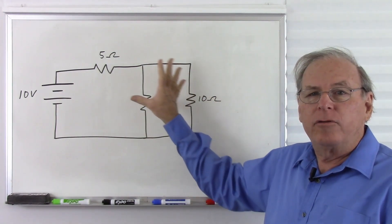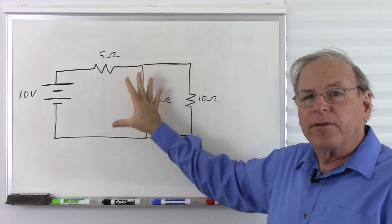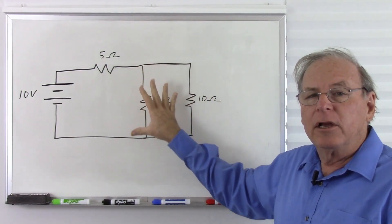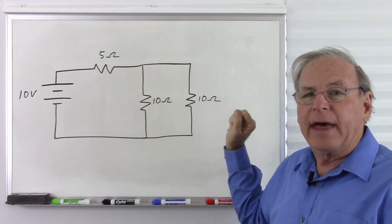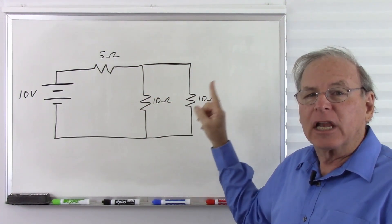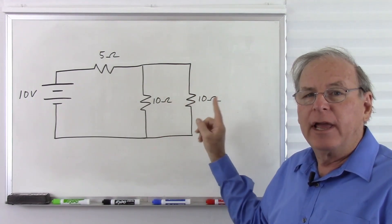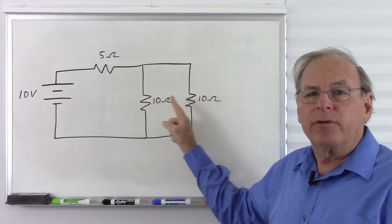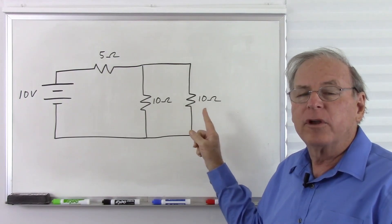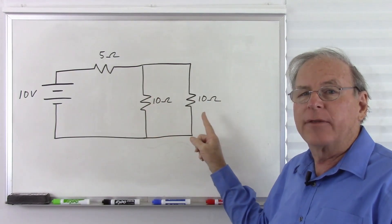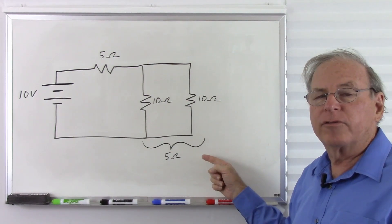Now let's see how these two parts of the circuit interact with each other. These two resistors are in parallel, so they act like a single resistor that has less resistance than the lowest-valued resistor. Both of these resistors have the same resistance — they're both 10 ohms. So together, they act like a 5 ohm resistor.